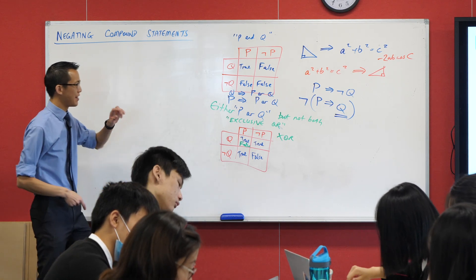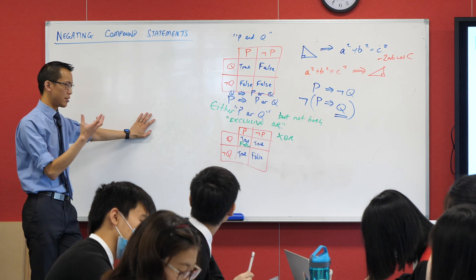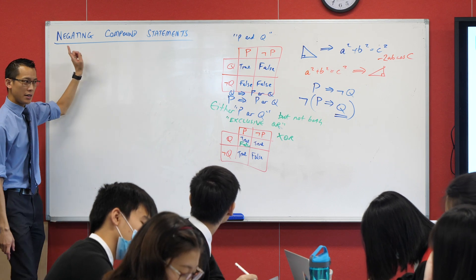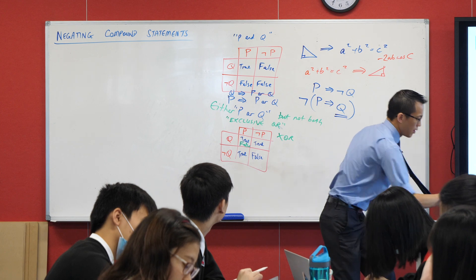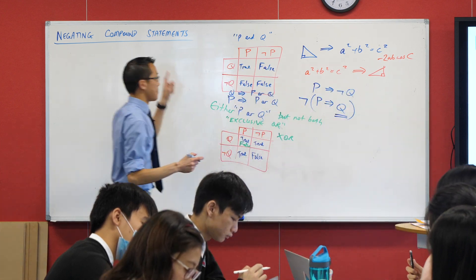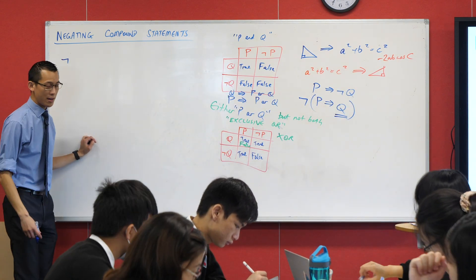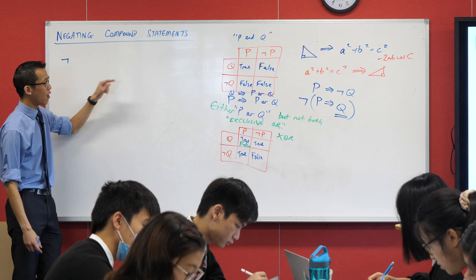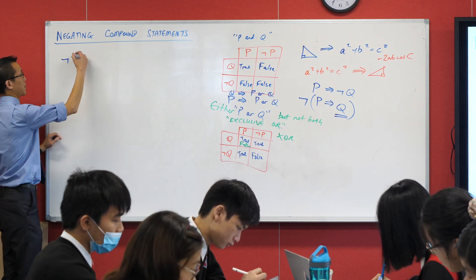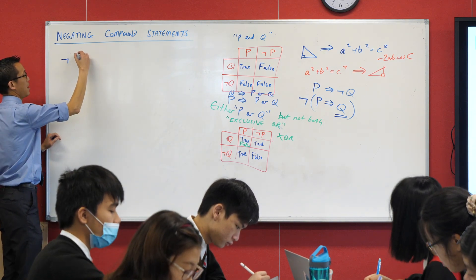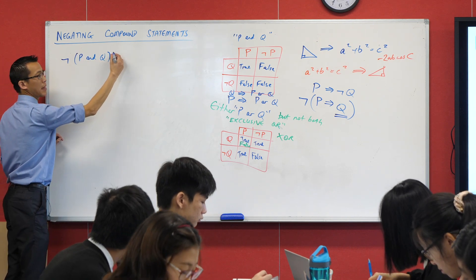Before we transition into thinking about English sentences, we've got to really get this negating thing. If you haven't already made this, let's do it. Let's think about the negation of each of these and see if we can unpack the logic and what's going on. If I say to you, what's the negation of P and Q?